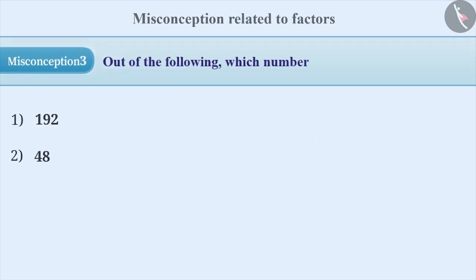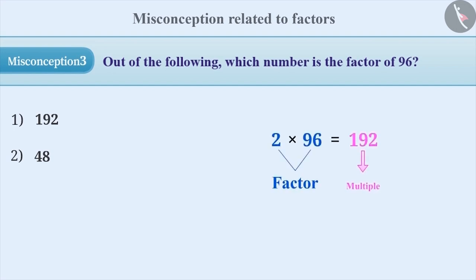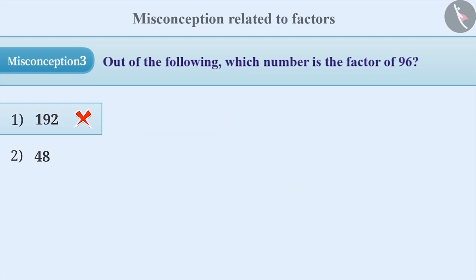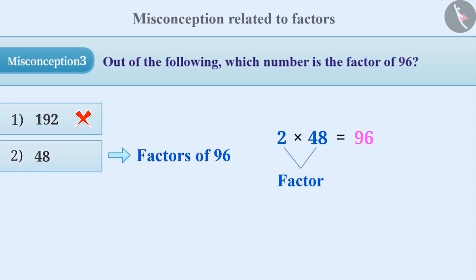Misconception 3. Out of the following, which number is the factor of 96? Due to the confusion in the concepts of factors and multiples, sometimes 192 is mistaken as the factor of 96, which leads to incorrect option 1. The correct way is that we can express 96 as 2 multiplied by 48. Therefore, 48 is the factor of 96, and the correct answer is option 2.